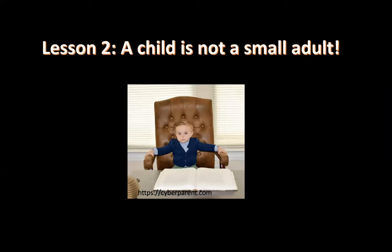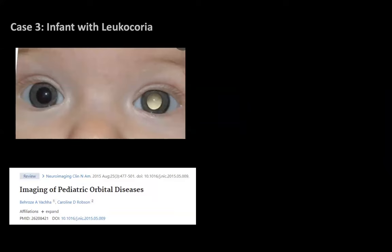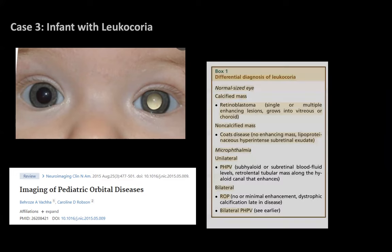Lesson two: a child is not a small adult. If you have leukocoria — a typical sign of something wrong in the eyes of a child — you have a range of differential diagnoses. That's an amazing paper from Professor Kelly Robson at Boston Children's. But the main differential diagnosis is retinoblastoma. Is it important for you to make the diagnosis? Well, normally this patient will come already with a diagnosis made by the ophthalmologist. What is important is that you give the oncologist all the information they need.